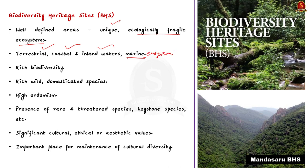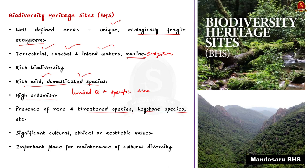Biodiversity heritage sites should also have high endemism — meaning plants or animals living only in a particular location, such as a specific island, nation, or defined zone. The site will also have the presence of rare and threatened species, keystone species, and species of evolutionary significance. A site should also have significant cultural, ethical, or aesthetic value to be notified as an area of cultural diversity.